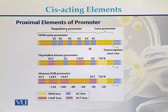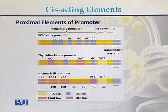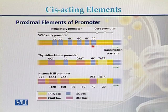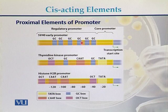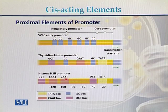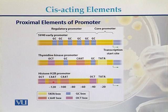Looking at the proximal elements of the promoter: here is the transcription start site, and here is the core promoter region containing the TATA box. In addition to the TATA box, there are regulatory promoter regions such as the GC box and the CAT box. All of these are proximal elements of the promoter and are called cis-acting elements.